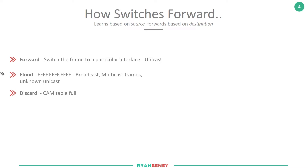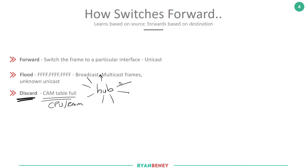There is also the option to discard. Two main reasons a switch may discard: first, if the CAM table is full — some switches will actually behave like a hub and flood traffic out all interfaces trying to deliver it. This is also a known attack vector: an attacker can intentionally fill the CAM table by sending traffic with many different source MAC addresses. Once memory is full the switch floods everything, and the attacker can capture that traffic using something like Wireshark on their port.